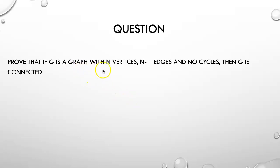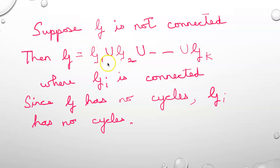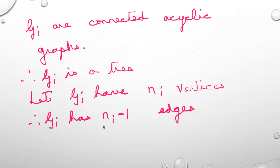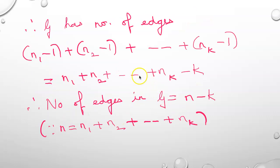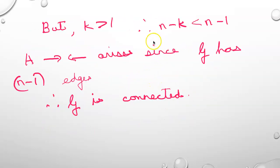Next question: prove that if G is a graph with n vertices, n-1 edges, and no cycles, then G is connected. Suppose G is not connected. Then G can be written as G1 union G2 union ... union Gk where each Gi is connected. Since G has no cycles, each Gi is a connected acyclic graph, meaning each Gi is a tree. Let Gi have n_i vertices; by our property of trees, Gi will have n_i minus 1 edges. So the total number of edges in G is (n1-1) + (n2-1) + ... + (nk-1) = n minus k. But k is greater than 1, so n minus k is less than n minus 1. This is a contradiction because G has n-1 edges. So our assumption that G is not connected is wrong, and G is connected.